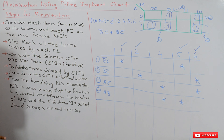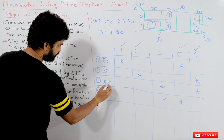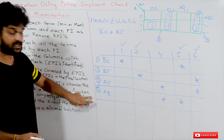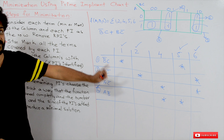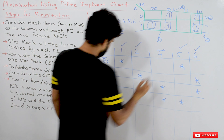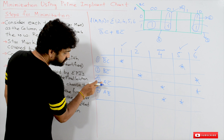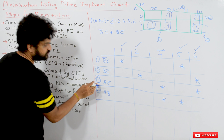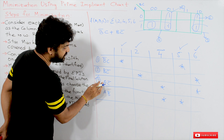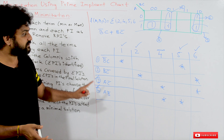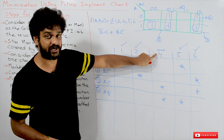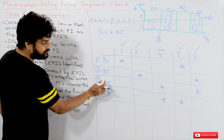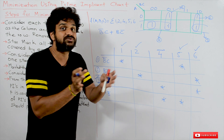From the remaining PIs — ac̄ and ab̄ — we choose in such a way that all terms are completely covered. The only term remaining to be covered is min term 4. We need to choose one of these two PIs. The choice should use the PI with less literals to produce the minimal solution.